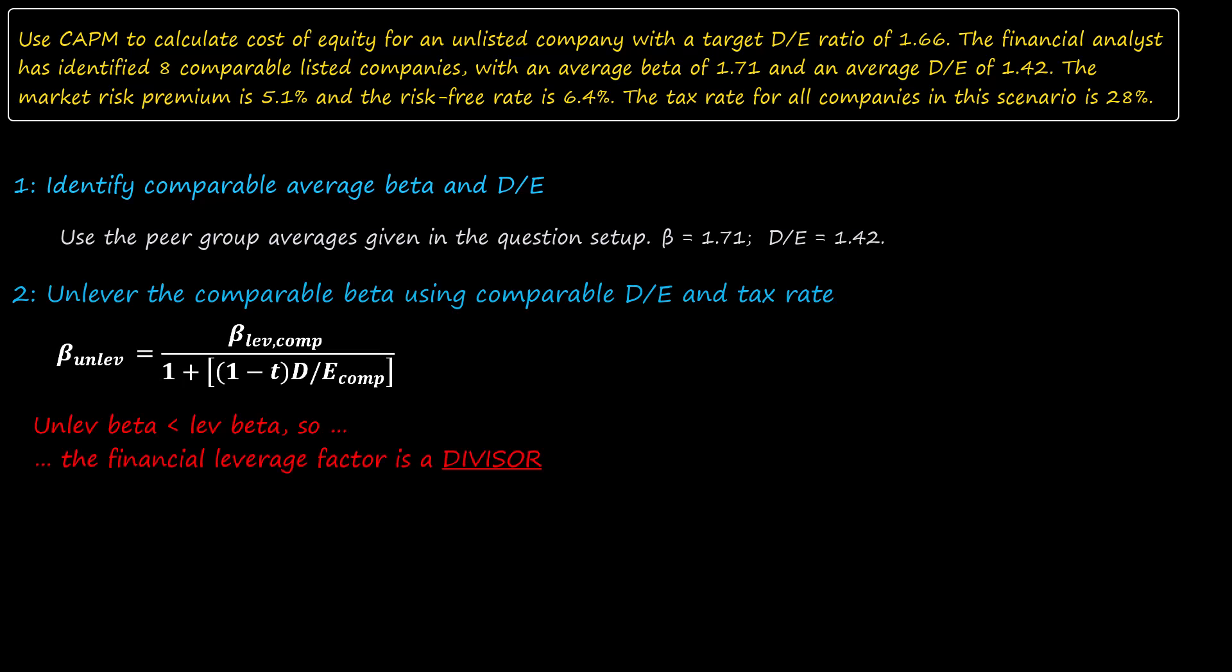Levered beta is divided by the financial leverage factor in order to get unlevered beta. Using this equation and making sure that we use the comparable D/E ratio, we calculate that unlevered beta is 0.846.